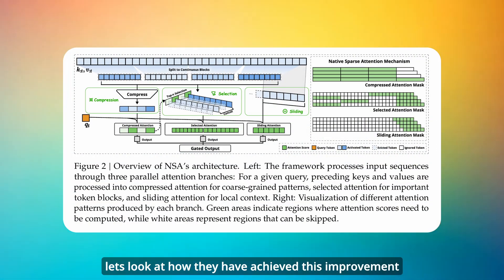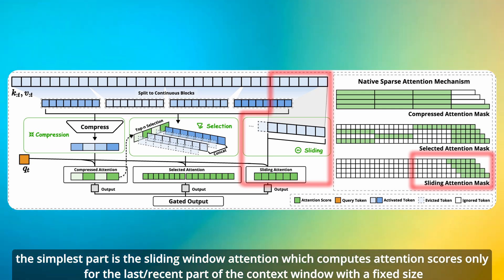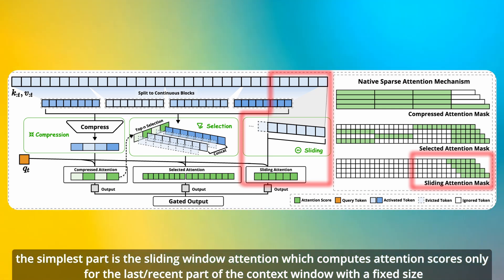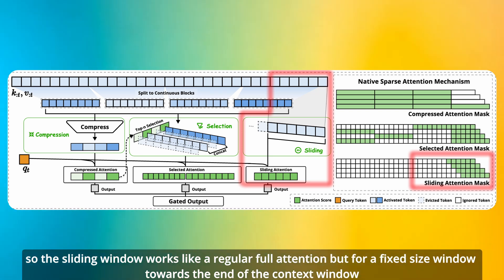Let's look at how they have achieved this improvement. The simplest part is the sliding window attention, which computes attention scores only for the last or recent part of the context window with a fixed size. So the sliding window works like regular full attention, but for a fixed size window towards the end of the context.